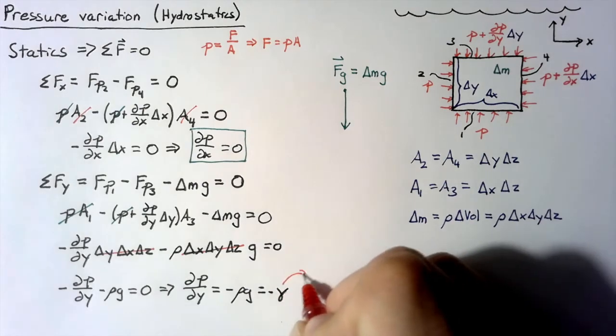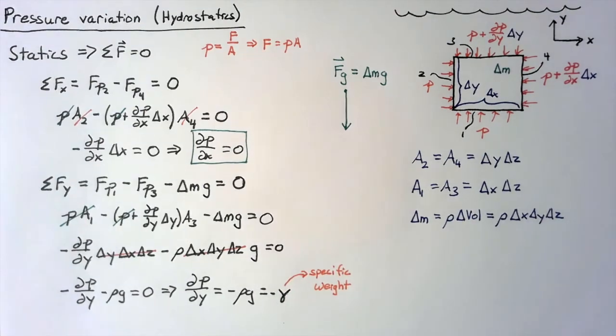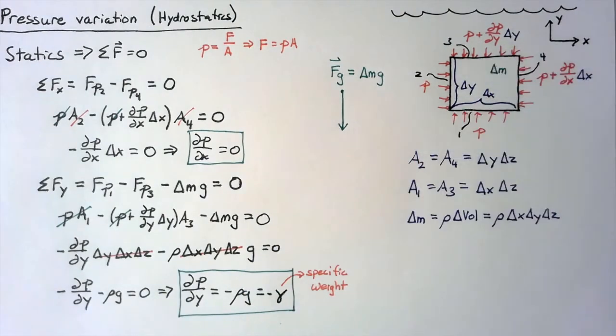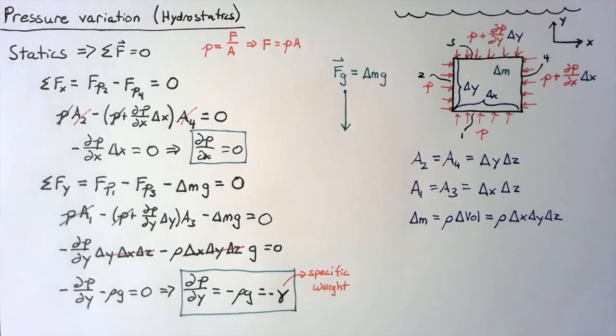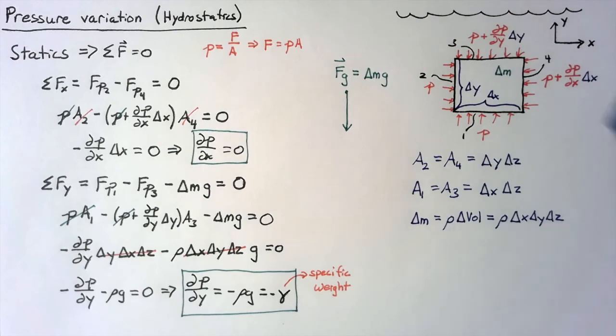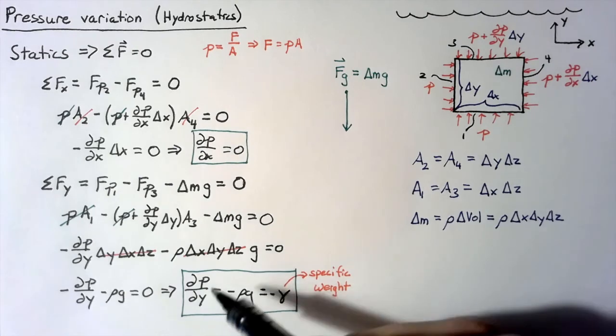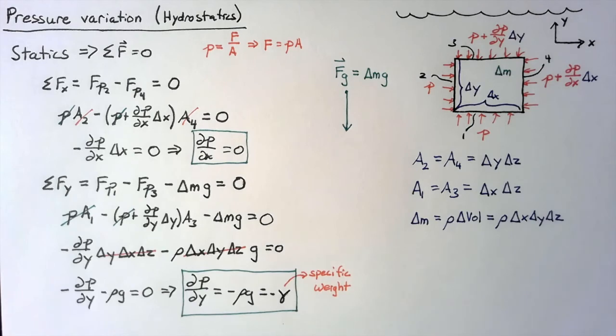So this gamma is known as the specific weight of our fluid. So density is simply how much mass does a fluid element have per unit volume. Gamma is simply the amount of weight that it has per unit volume.